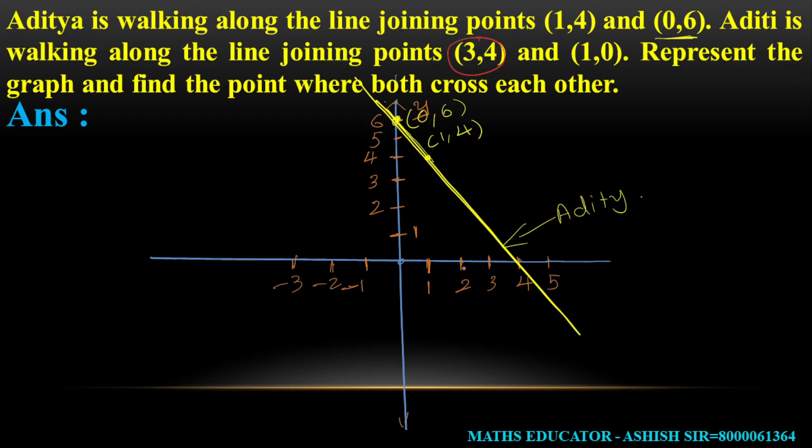Now for Aditi's path, the points are (3,4) where x value is 3 and y value is 4, and (1,0) where x value is 1 and y value is 0. I will join these points to make Aditi's line.